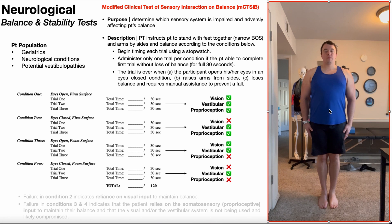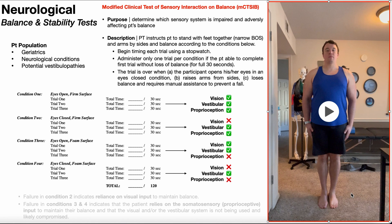Condition one is where the eyes are open and you're standing on a firm surface — preferably wood, tile, or concrete: something even, level, and hard. Low-rise carpet is acceptable but less valid. If the patient achieves 30 seconds on the first trial, you move on to condition two. If not, two additional trials are required. On a firm surface, the patient can rely on somatic sensation from the plantar surface of the feet, proprioception in the ankles, vestibular information, and vision. This is the easiest of all conditions.